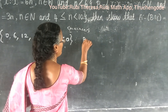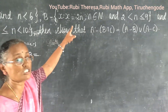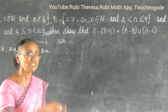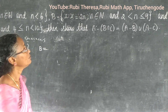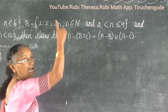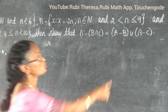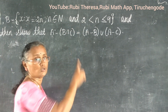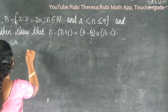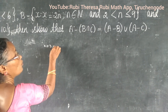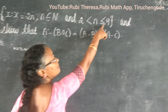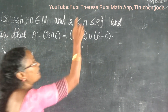Next, B equals x such that x equals 2n — multiples of 2. n belongs to natural numbers N, and n is greater than 2 and less than or equal to 9. So n equals 3, 4, 5, 6, 7, 8, 9 — note: not equal to 2, strictly greater.